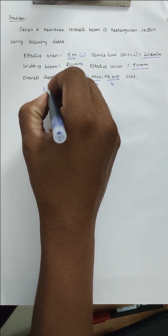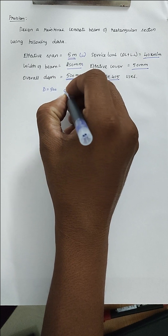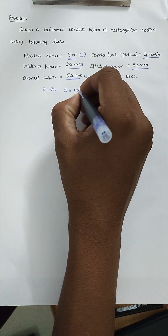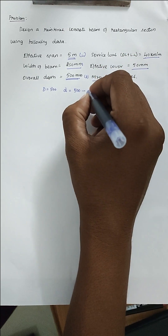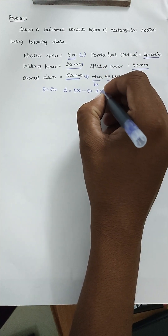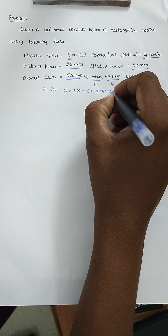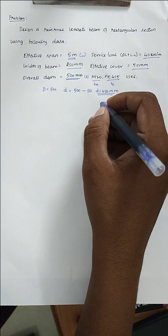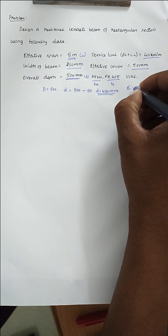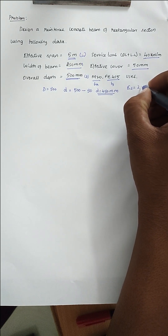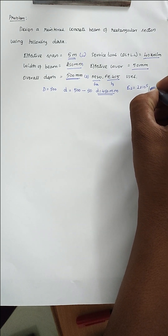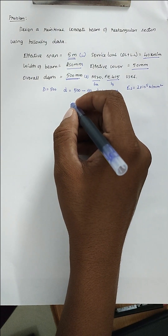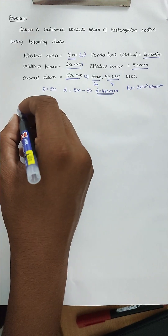The overall depth D is 500 mm. The effective depth d = 500 mm minus the cover 50 mm, so d = 450 mm. Also, Es = 2 × 10⁵ N/mm². These are all the given values.